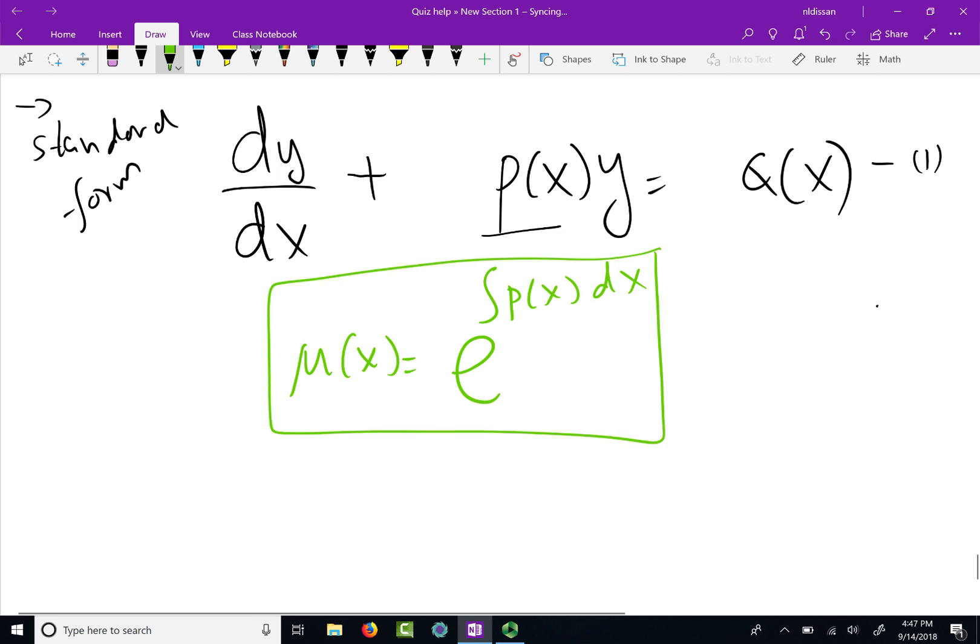Now if you do not have the standard form, you will have a wrong P and you will be finding a wrong integrating factor. So make sure you have the standard form correctly. That means you have a coefficient 1 here. So you have the standard form, you identify P and you find the integrating factor.